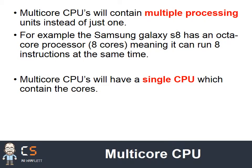Multi-core CPUs — we've spent quite a lot of time looking at this, so I'm not going to spend a huge amount of time on it. We can do multiple processing with it. For example, the Galaxy S8 has eight cores, which means it can run eight instructions — eight processes — at the same time. Multi-core CPUs have a single CPU containing all those cores on a single circuit.